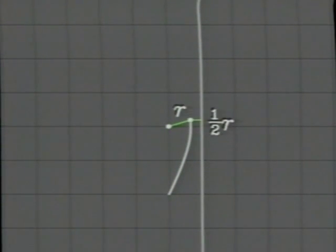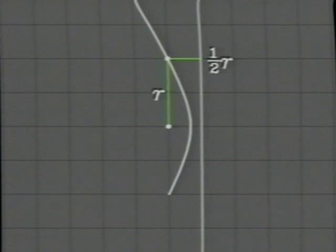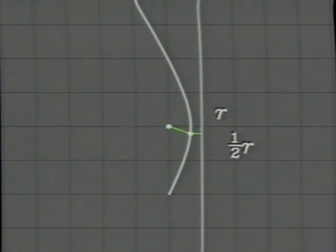If the point is closer to the directrix, the result is a hyperbola, with eccentricity greater than 1.